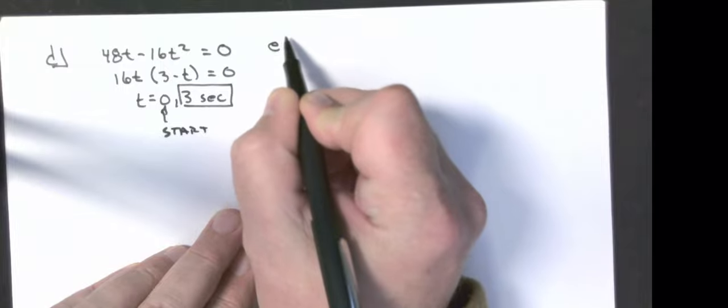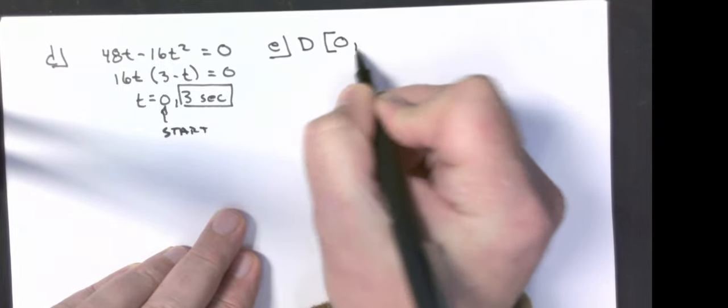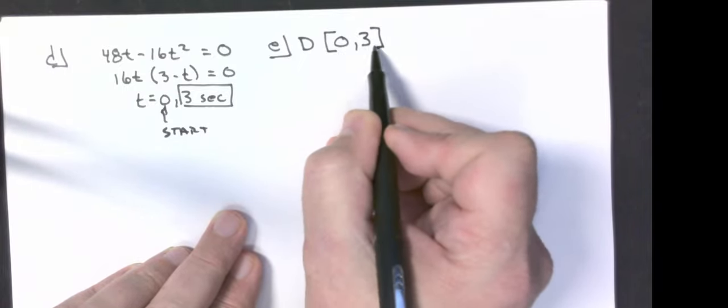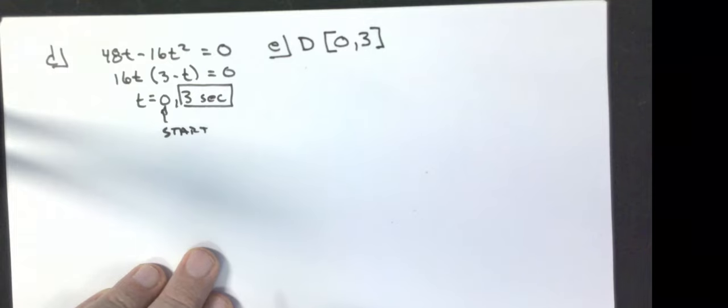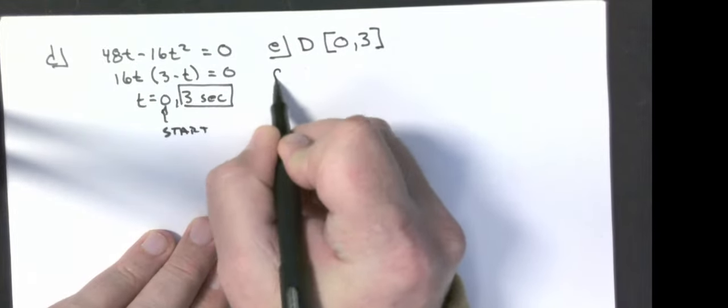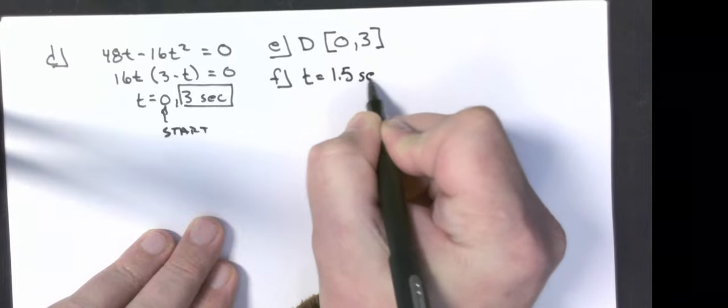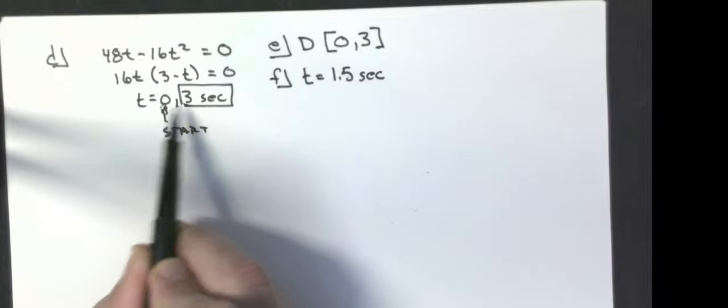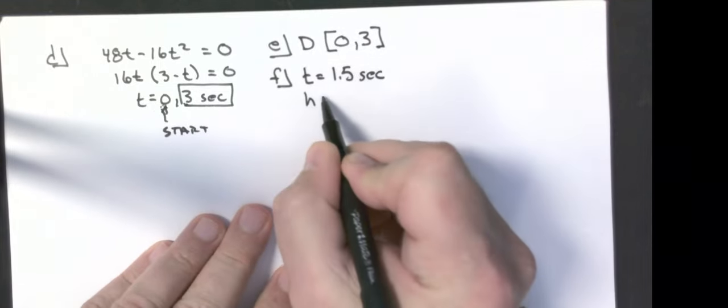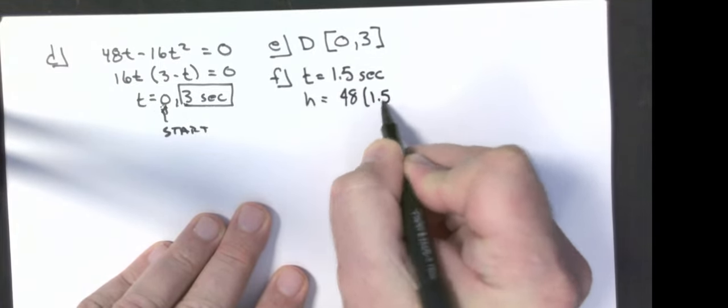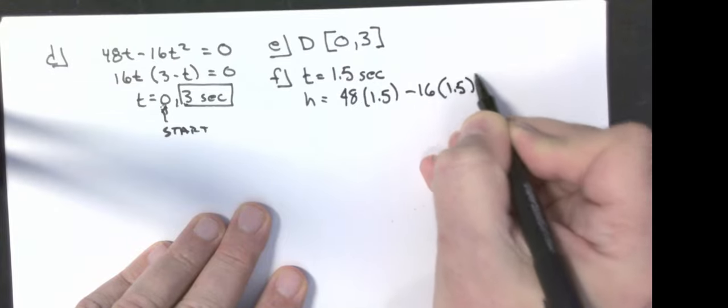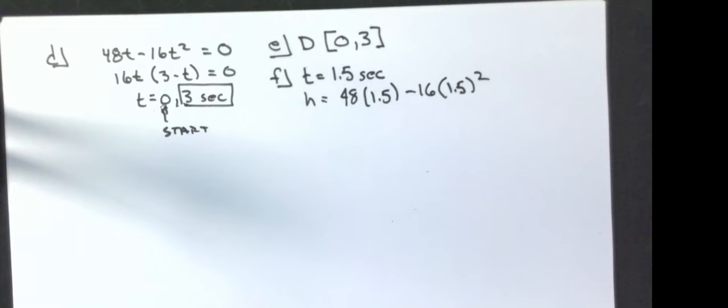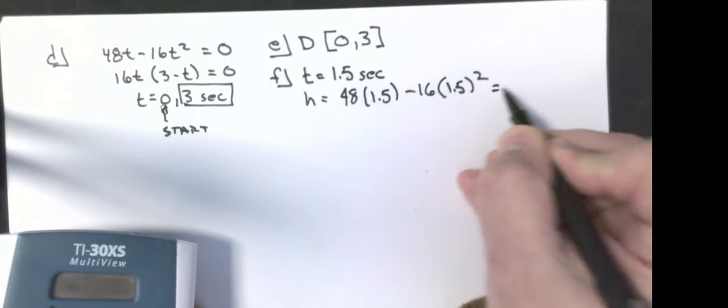Part e, what is the domain of the function? Well, 0 to 3 seconds. It can't go negative in time. And it doesn't really matter what happens after 3 seconds when it hits the ground. Part f, what is the maximum height the rock reaches? And when does it reach that height? Well, time is going to be 1.5 seconds. How do I know that? Well, it's a parabola with two x-intercepts. The vertex is halfway in between these two. The height, I'm going to put a 1.5 into both of those t's. That's a calculator question. 48 times 1.5 minus 16 times 1.5 squared. And I get 36 feet.